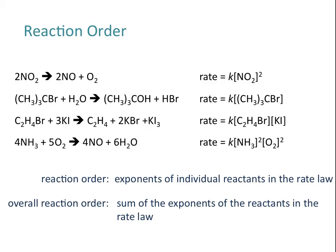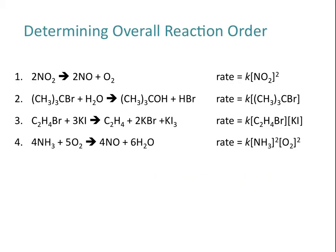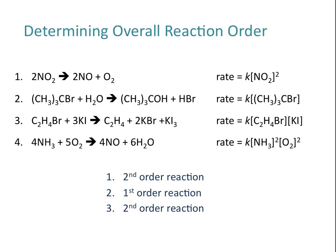Remember, if there's no exponent written, that's the same as writing an exponent of 1. Let's determine the overall reaction order for each of the examples — it's as simple as adding up the exponents. Our first example is a second order reaction. Our second example would be a first order reaction. Our third example would be second order overall because it's first order with respect to C₂H₄Br and also first order with respect to potassium iodide.